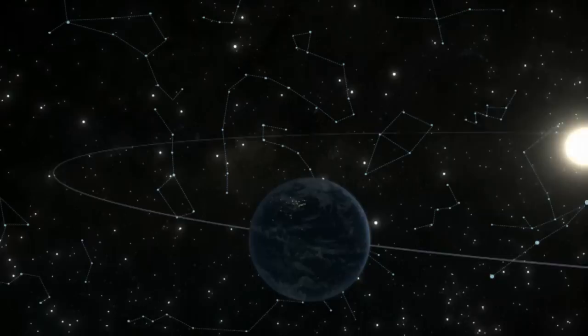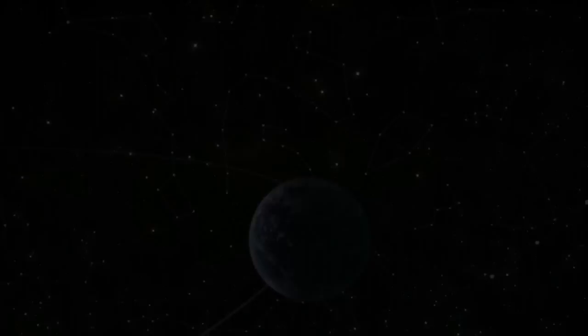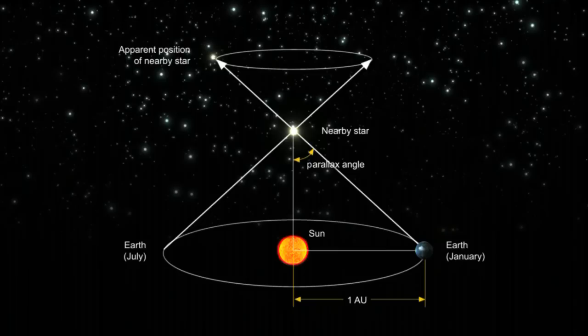It is the only direct way to measure distances to celestial objects. Astronomers measure the position of a star from two points in the Earth's orbit with a known separation. This distance and the measured angular displacement with respect to the fixed background can then be used to calculate the distance to the star.